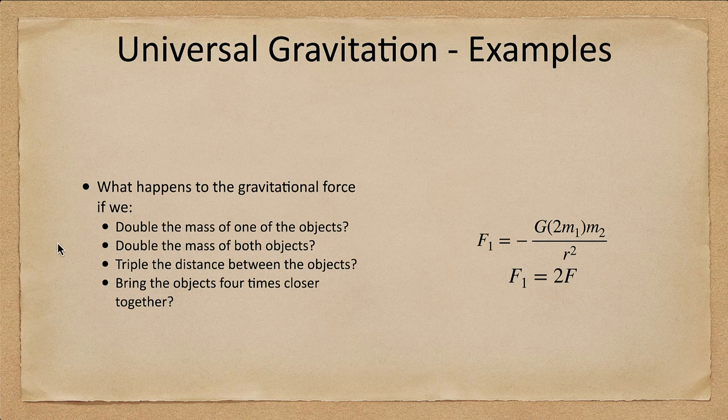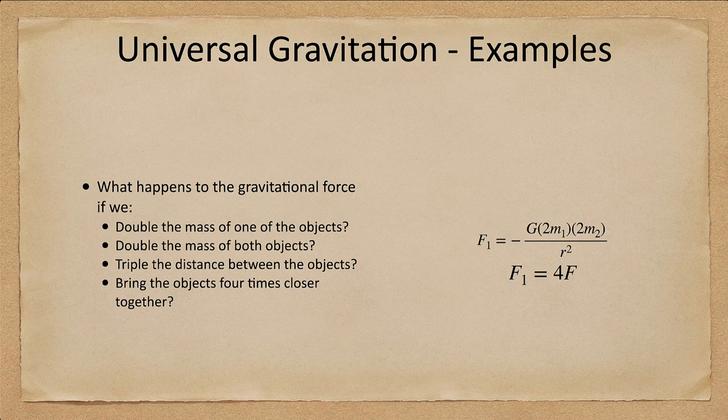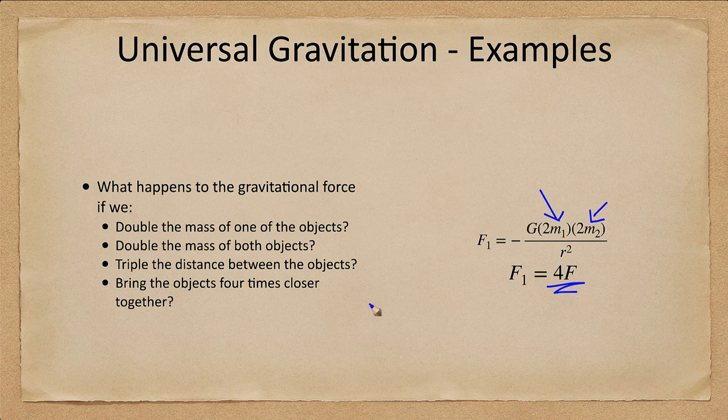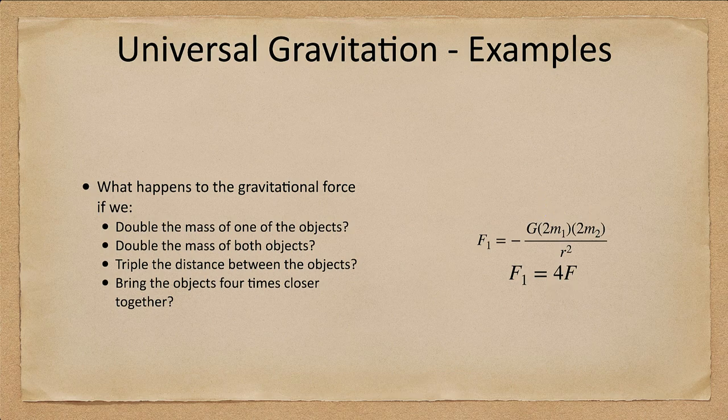What if we double the mass of both objects? Well now we have the mass there twice. 2m and 2m and 2 times 2 being 4, everything else is still the same. We will get the force being four times as much. So if we double the mass of both objects the force would be four times as great.